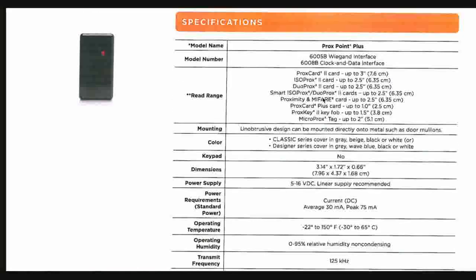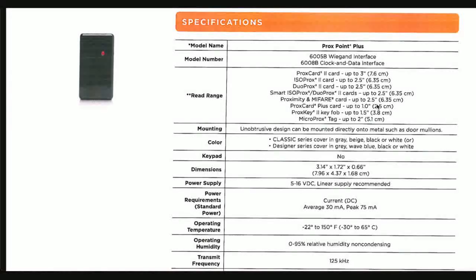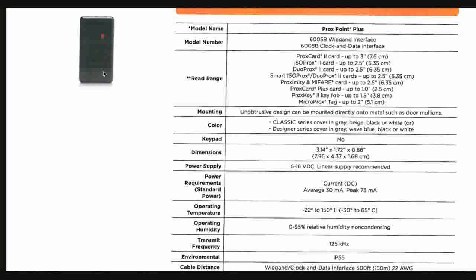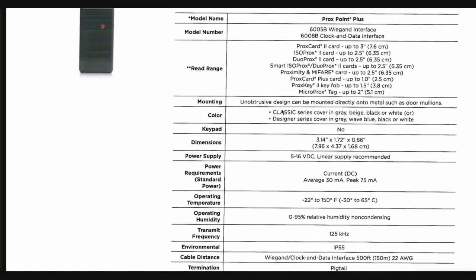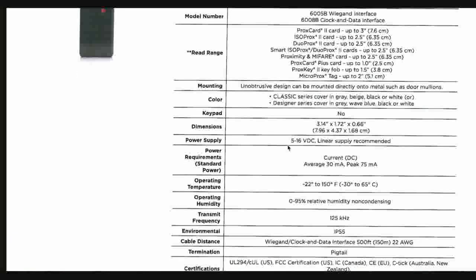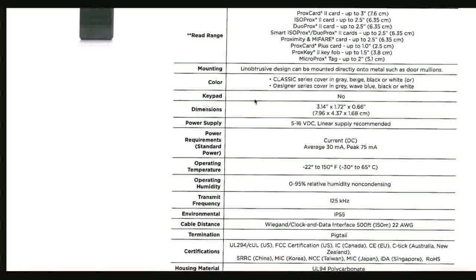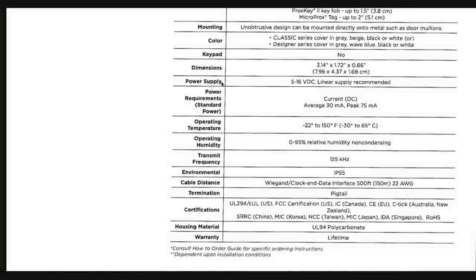The read range is about 5 centimeters for one specific card type and 7.6 centimeters for another. This depends on the card's coil sensitivity — a more sensitive card allows a greater read distance, while a less sensitive card requires being closer to the reader. We also have mount type, color, no keypad, and dimensions.